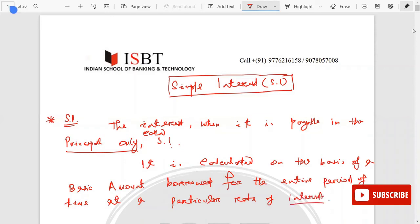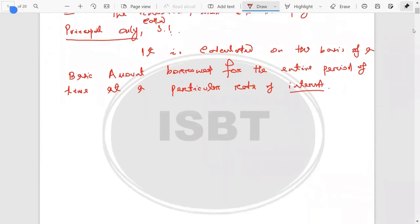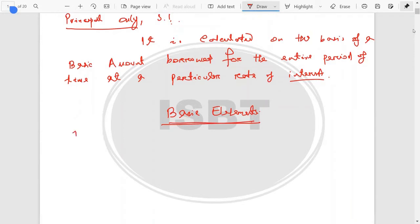This is the definition. So we can analyze again - the rate of interest is calculated only on principle, whatever may be the time, the particular rate of interest. This is called Simple Interest.